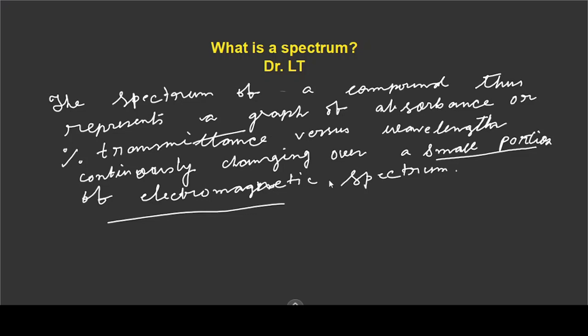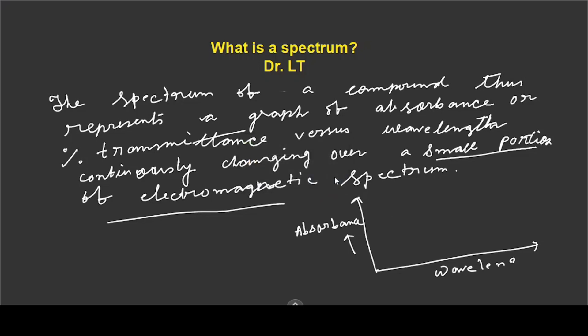Only the UV-visible portion of the electromagnetic radiation is considered. The UV-visible spectra of matter — for example, NMR uses radio frequency — but here we focus on the UV-visible region of spectra of any compound.